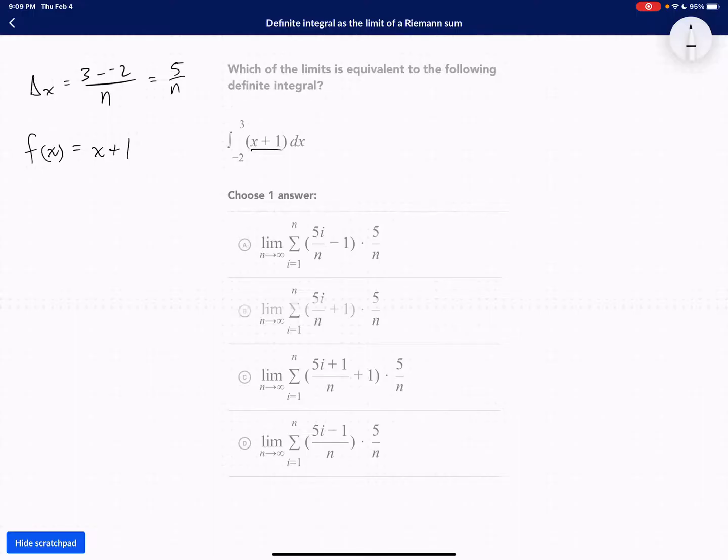So now we have our function. We have our delta x. Now we just need to find x sub i. What is x sub i? x sub i is what we are plugging into the function for the summation notation. So it would be a plus delta x, which is 5 over n, times i.